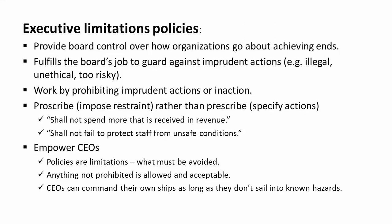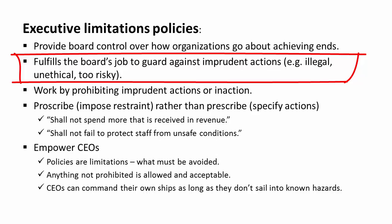Executive limitation policies provide a practical means for the board achieving control without micromanaging the organization. It's a key part of the board's job to assure that the organization does not act imprudently — and in fact many boards focus on this role, sometimes at the expense of establishing ends. Imprudent in this sense can mean something illegal or unethical, but it can also cover activities where failure to act would be considered imprudent.